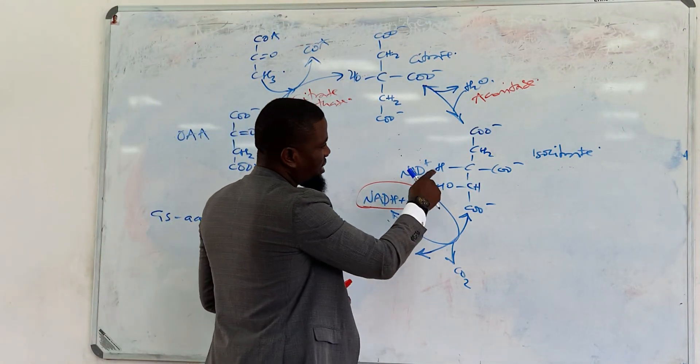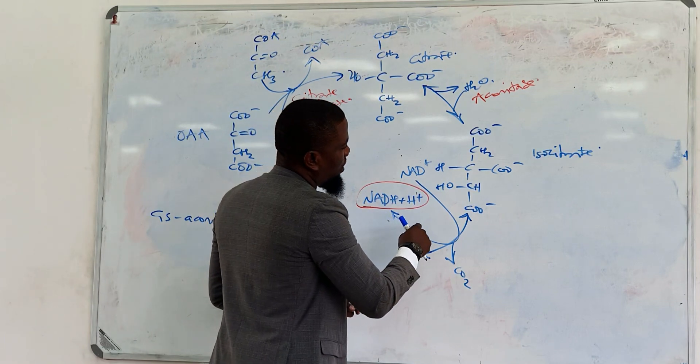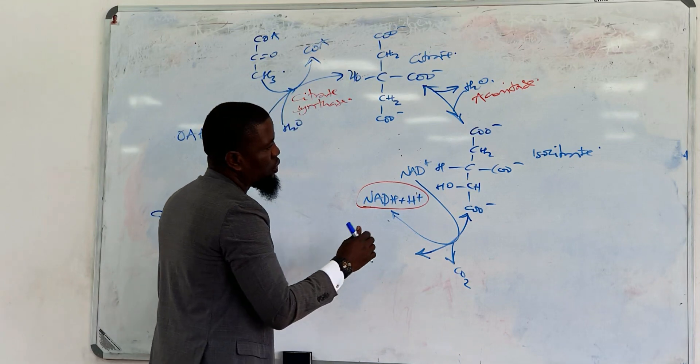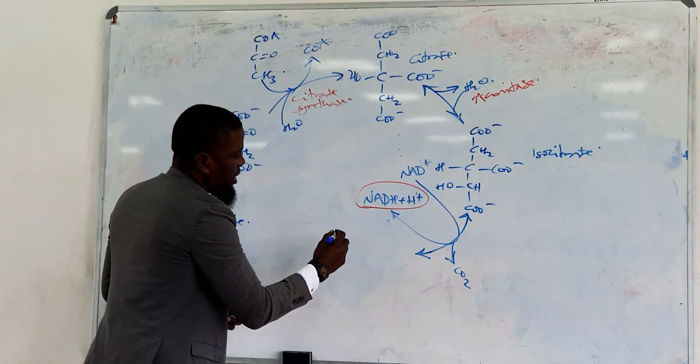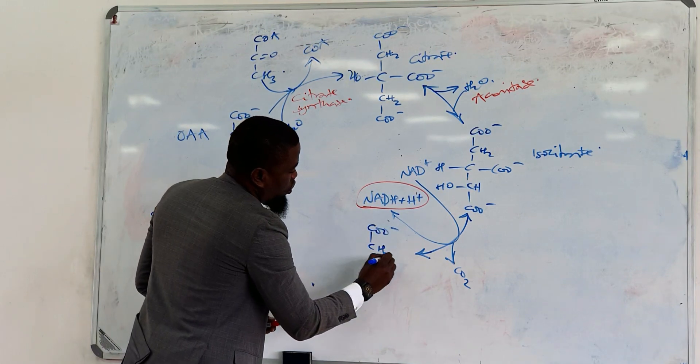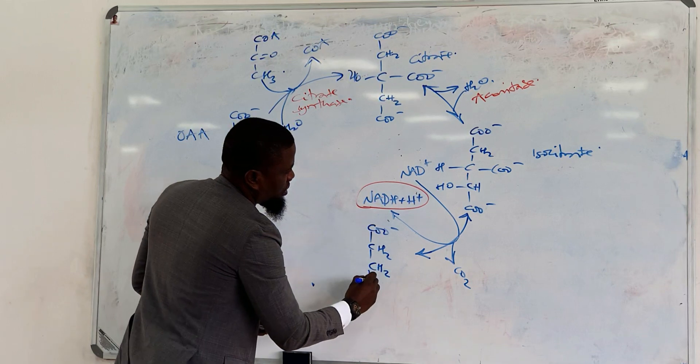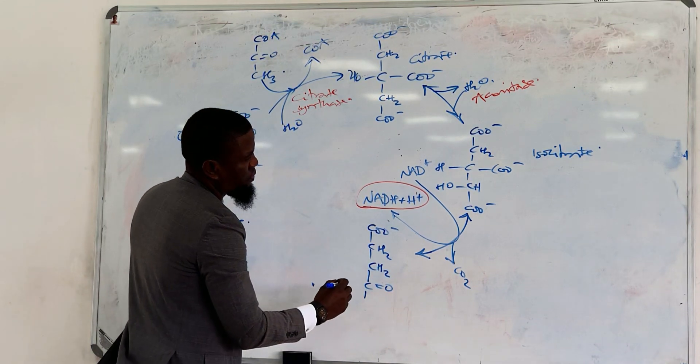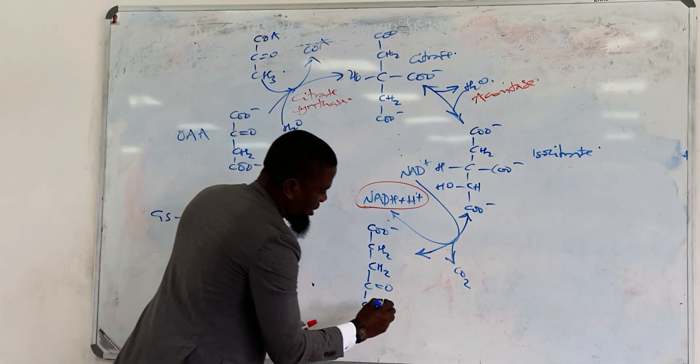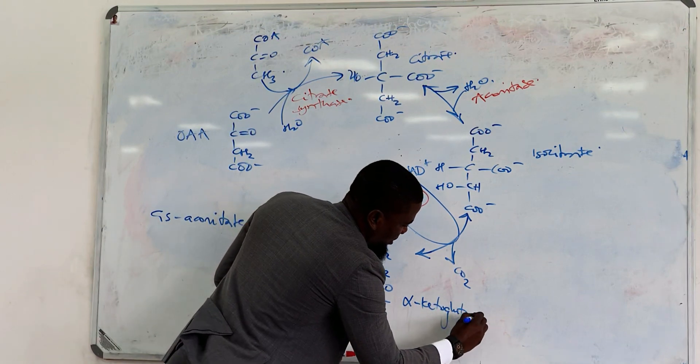So this would involve oxidation. The hydrogens are actually going to go out. The carbon dioxide is going to go off, and the end product would look something like this. This is alpha-ketoglutarate.